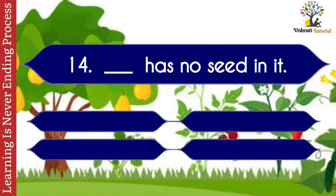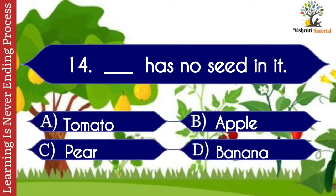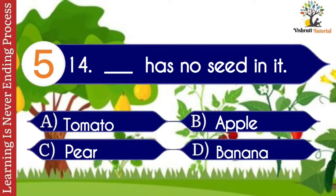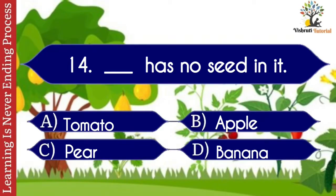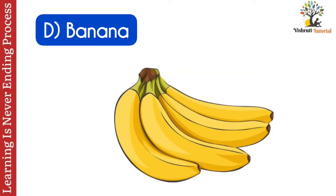Question number fourteen: dash has no seed in it. Options: A. Tomato, B. Apple, C. Pear, D. Banana. The correct answer is D. Banana. Banana has no seeds in it.